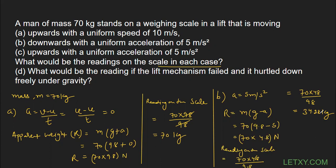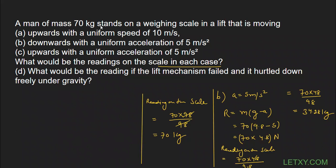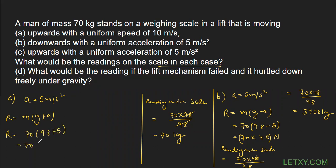Now for part C: the lift is moving upward with a uniform acceleration of 5 m/s². This is similar to part B, but since the lift is moving upward we use g + a instead of g − a. The apparent weight = m(g + a) = 70 × (9.8 + 5) = 70 × 14.8 N.